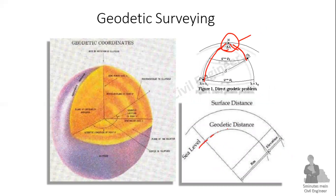In geodetic surveying, measurements are referenced to the mean sea level, and the triangle formed is a spherical triangle with spherical angles.